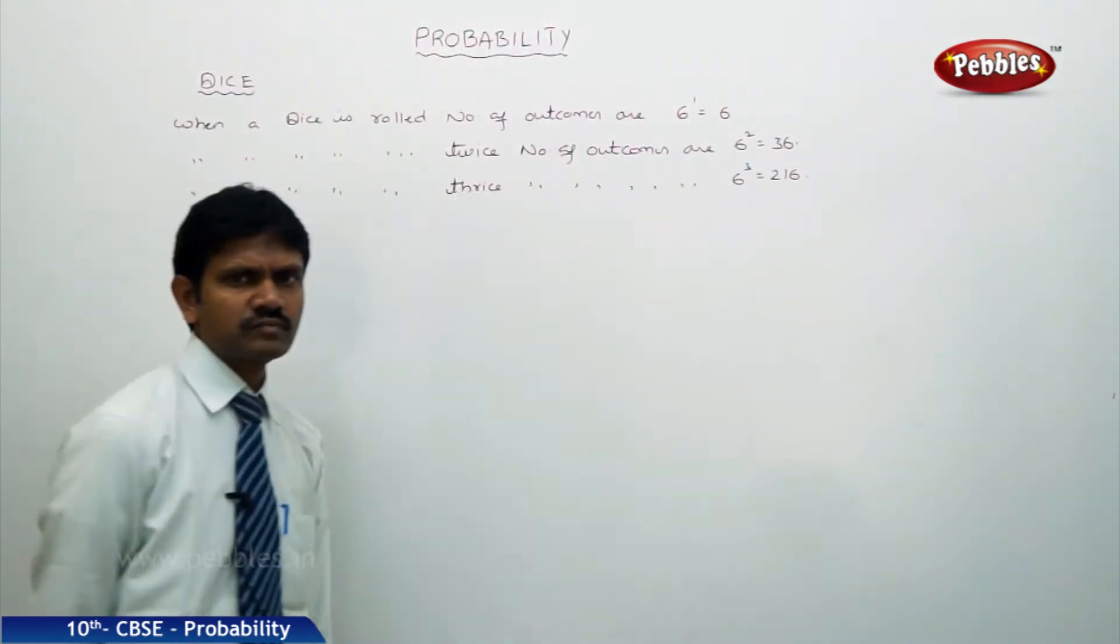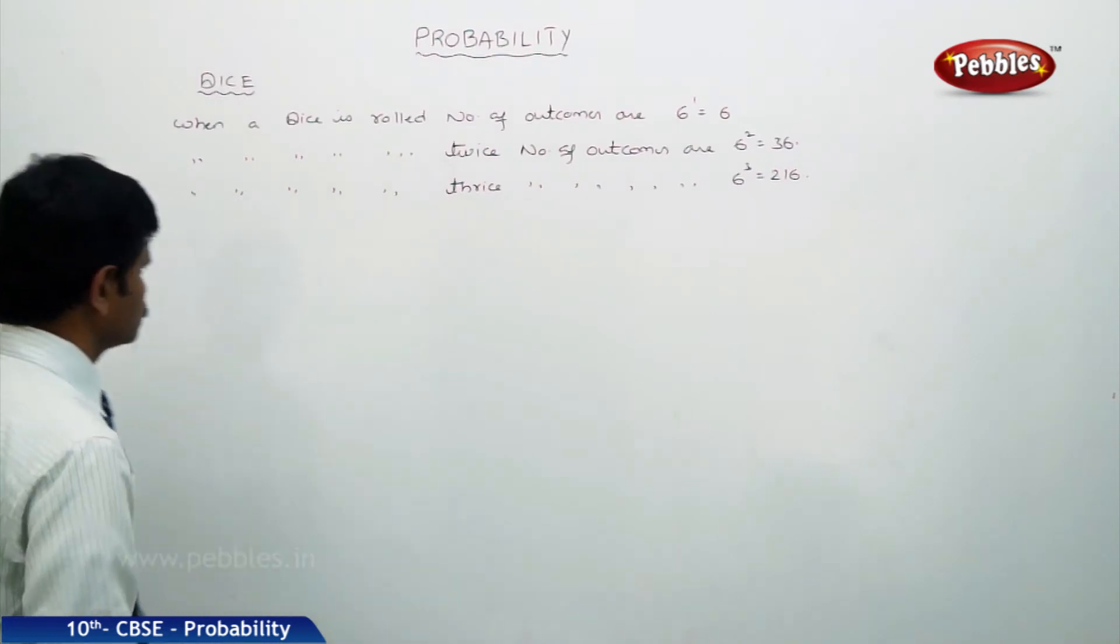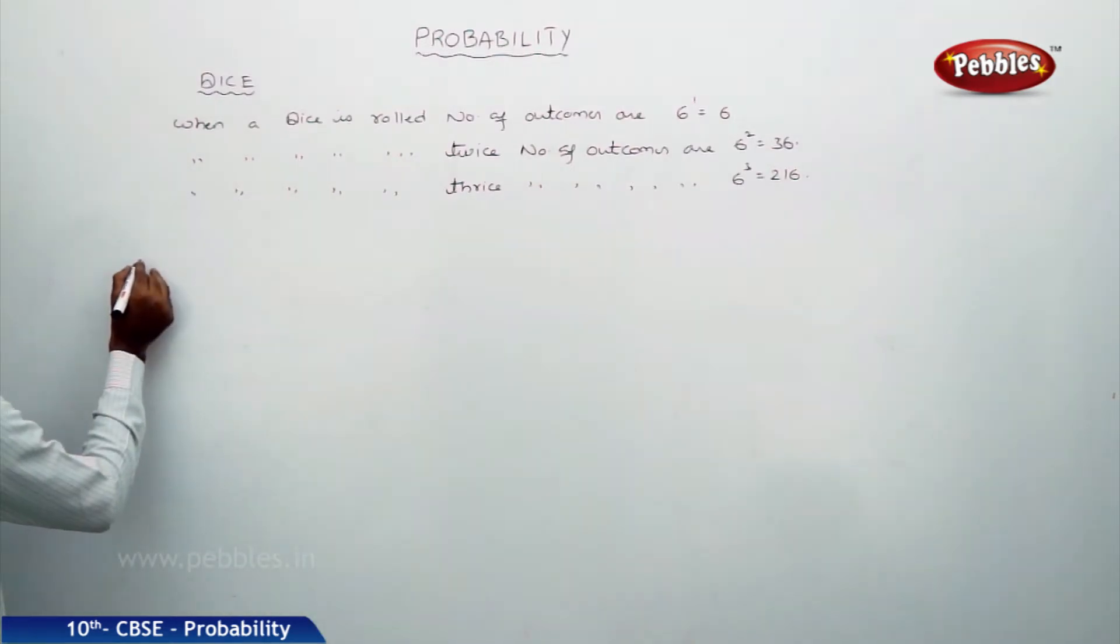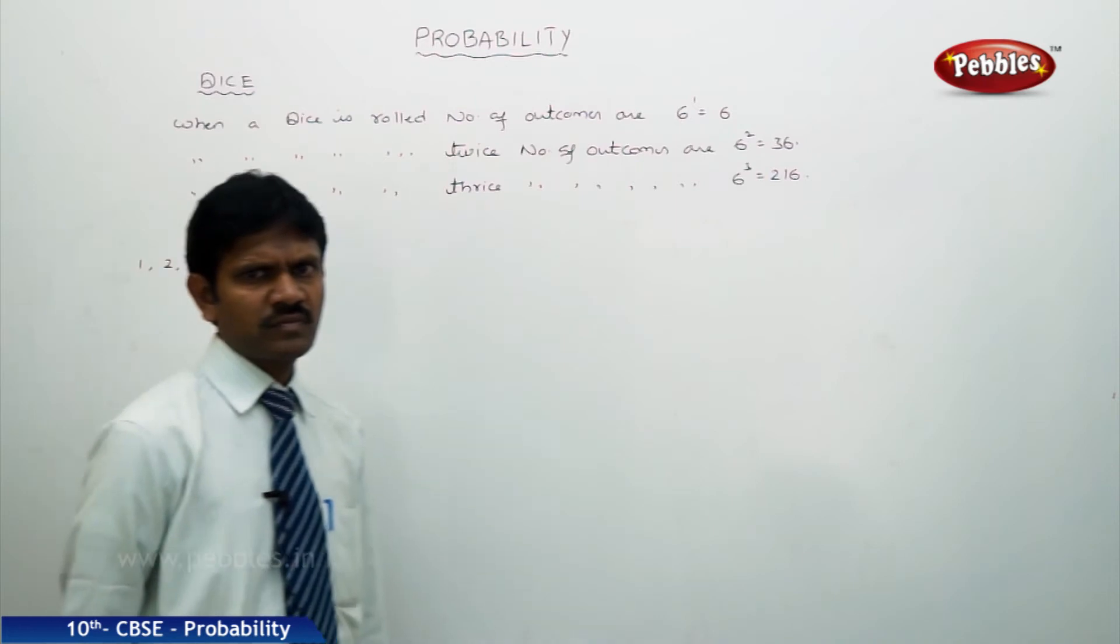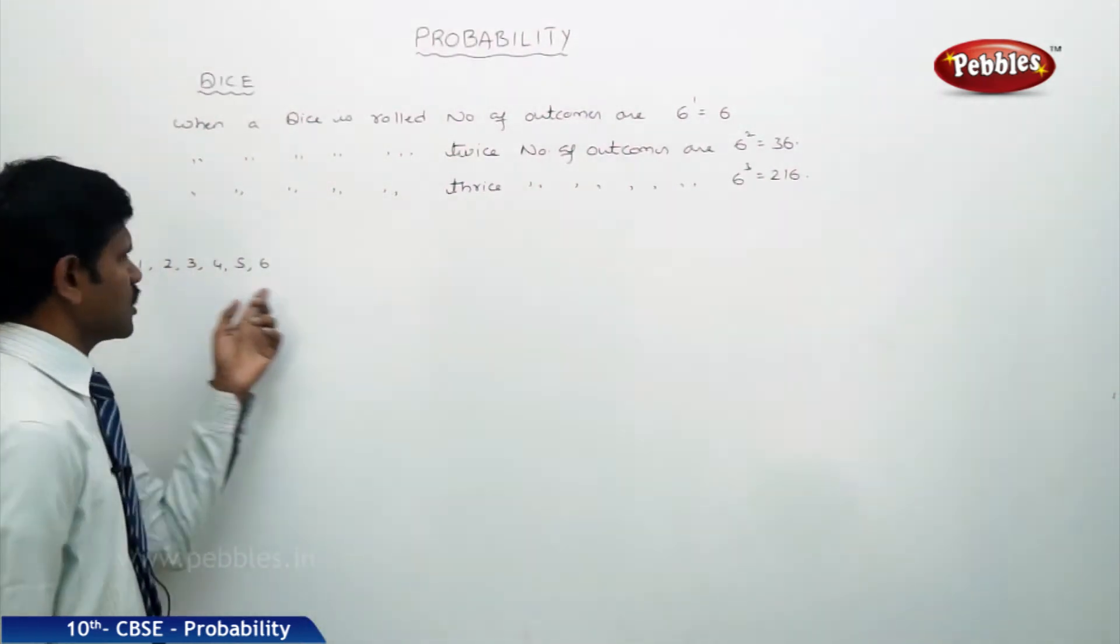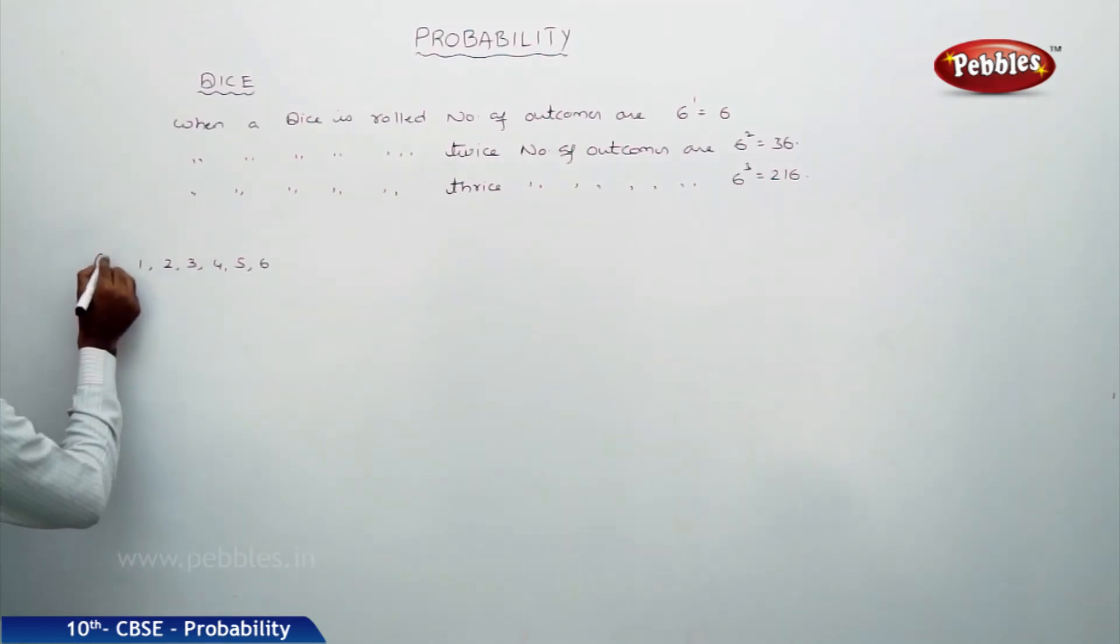And so on. Let us see these options in detail. When the die is rolled, outcomes are 1, 2, 3, 4, 5, 6. Each outcome is individual. Now let us come to the second case.